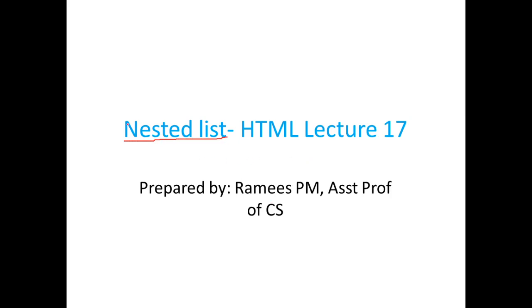What is nested list? If a list contains another list, then that is called a nested list. In most cases, one particular list will not be sufficient for us to show our data. So in those cases, we need a nested list - that is, one list to be contained in another list.